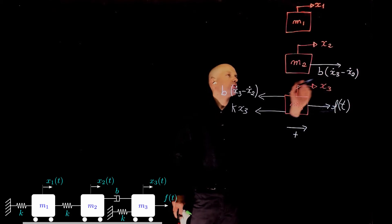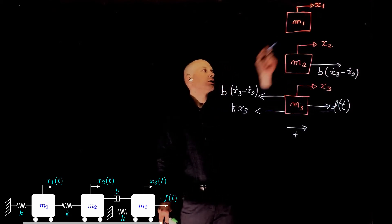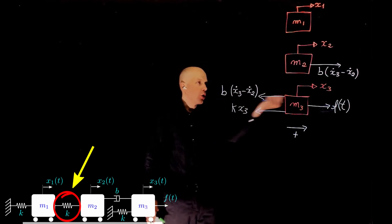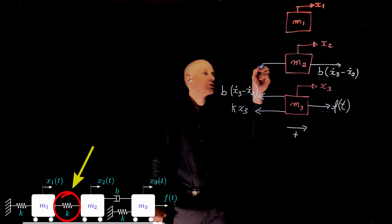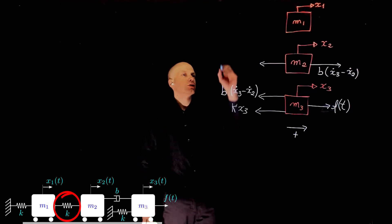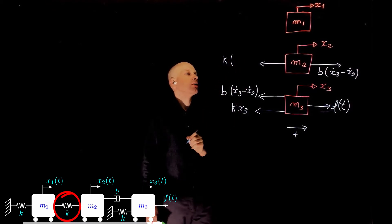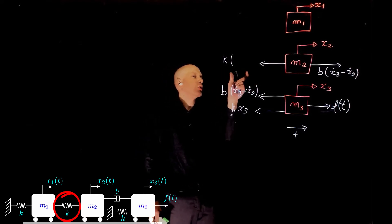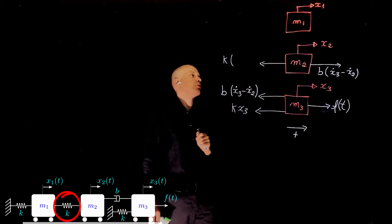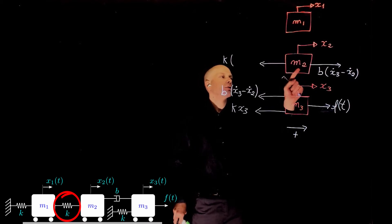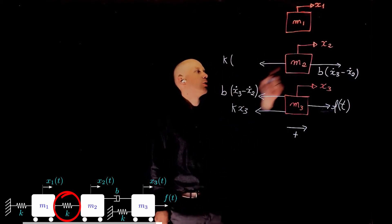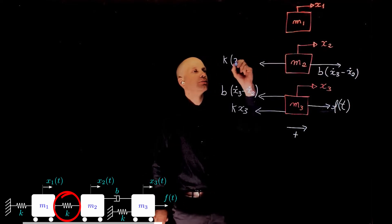If m2 moves to the right, m2 is connected to m1 through a spring. So now there is another force acting on m2 that holds it back and that force is due to the spring k. The magnitude of that force is the stiffness times the relative compression or stretch of that spring. In this case it would be the displacement of mass m2 minus the displacement of mass m1, so k(x2 minus x1).